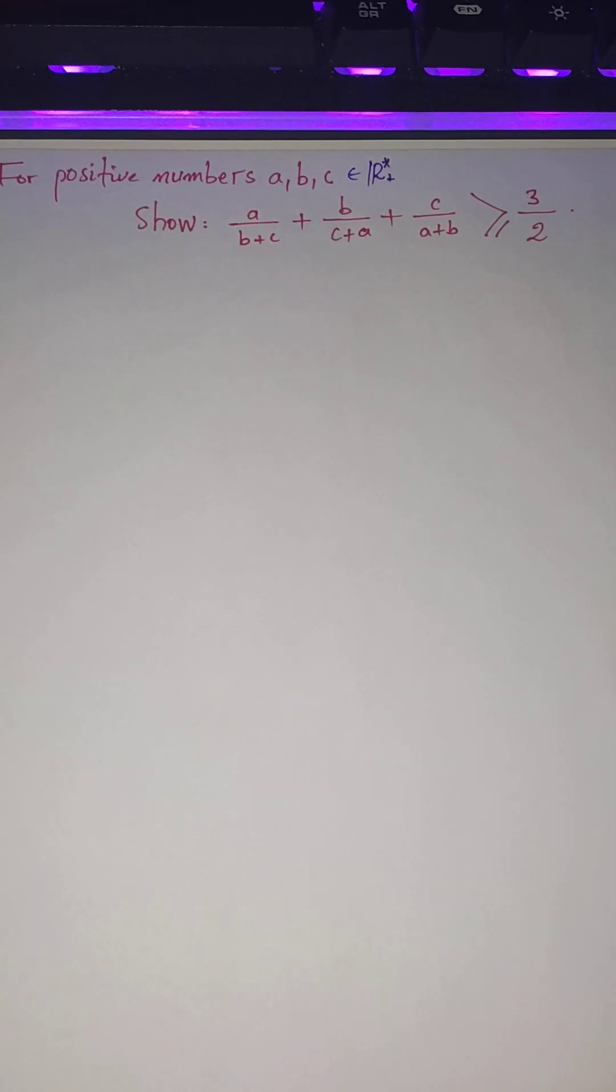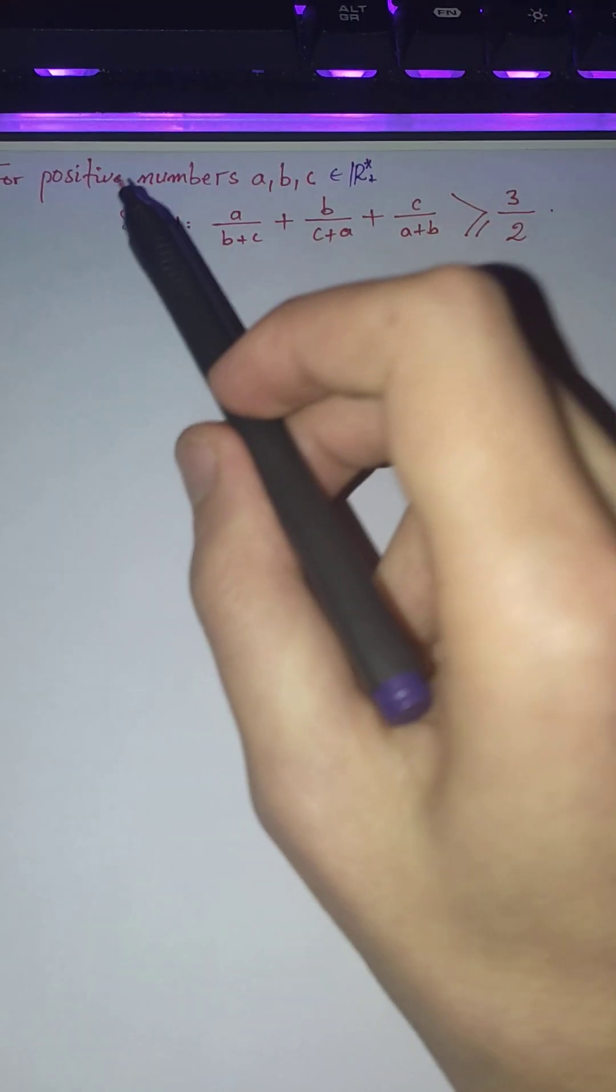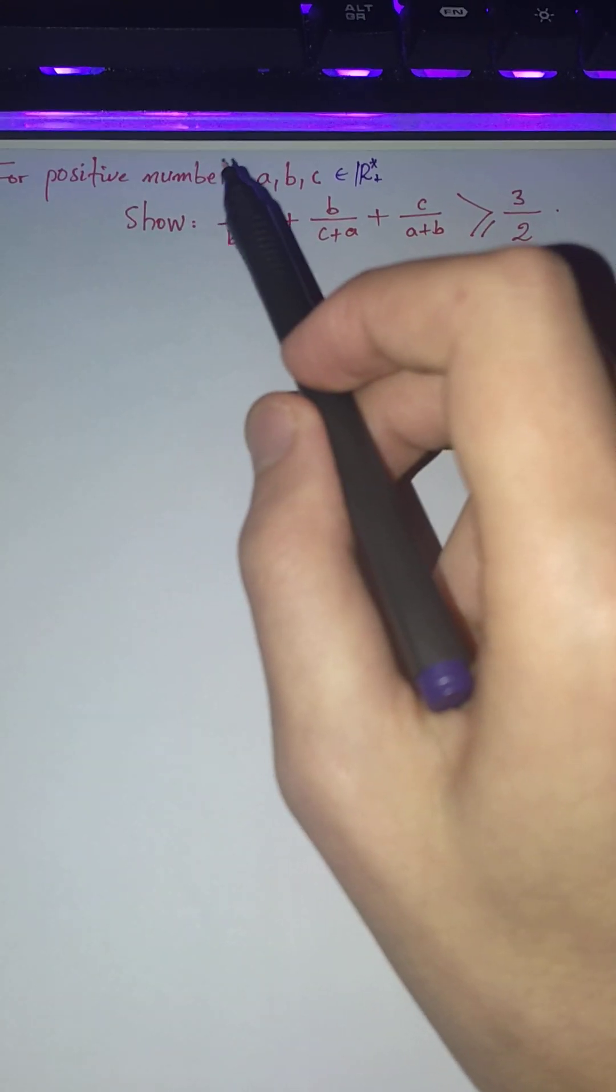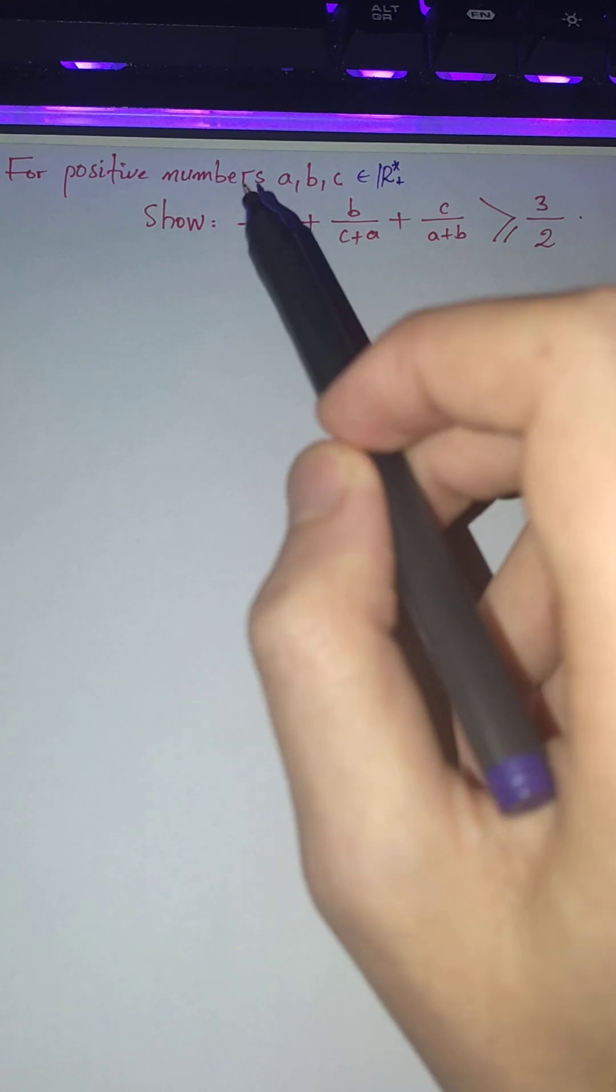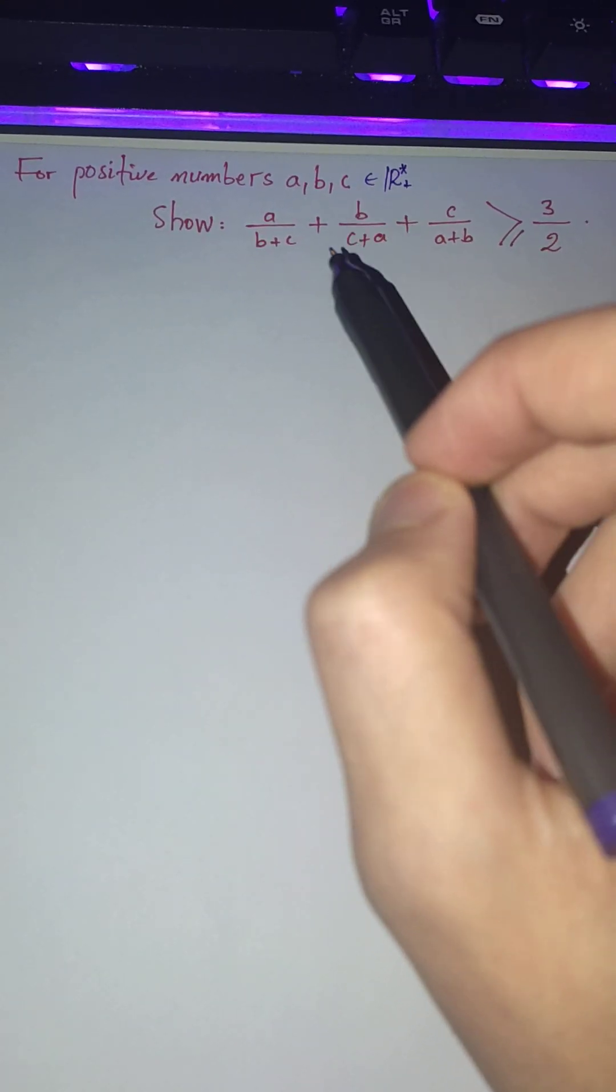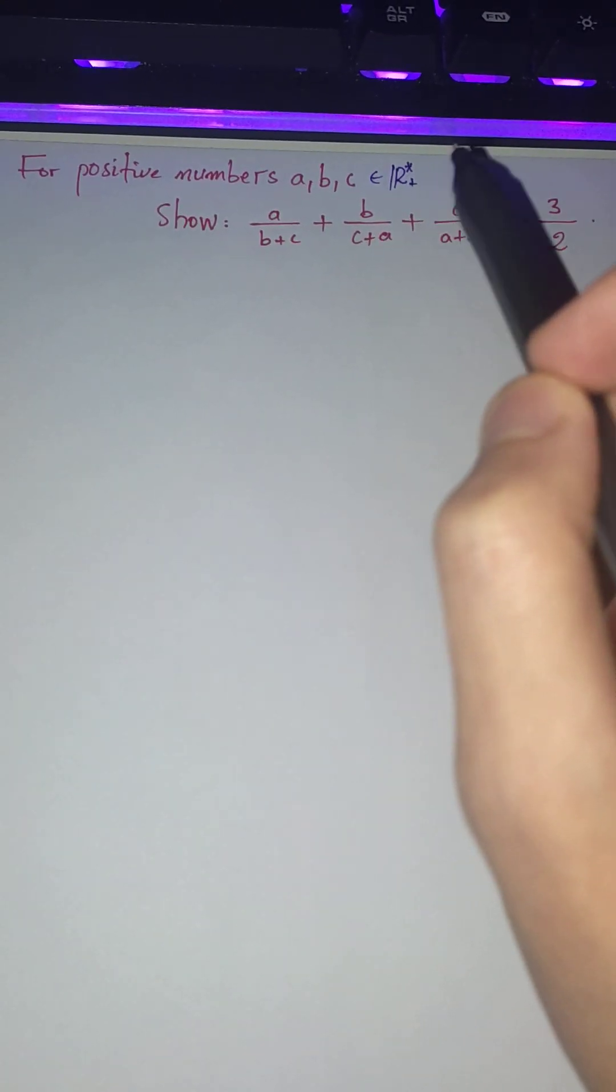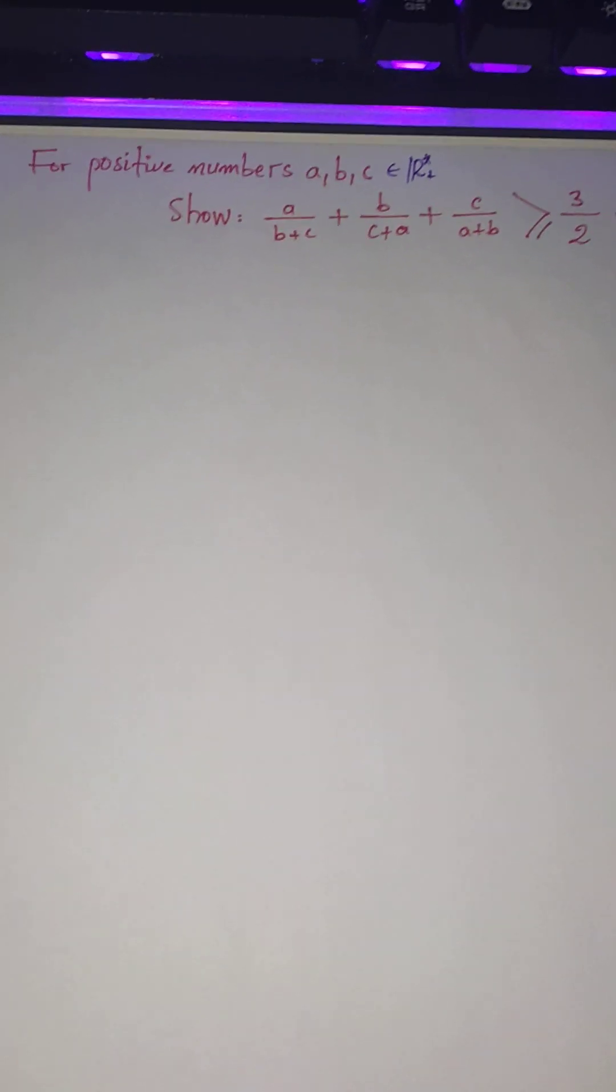Hi friends, we are given three positive numbers a, b, c, and we want to show that a over b plus c plus b over c plus a plus c over a plus b is bigger than or equal to 3 over 2.